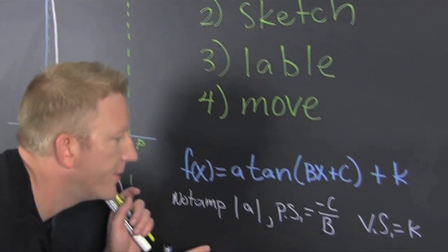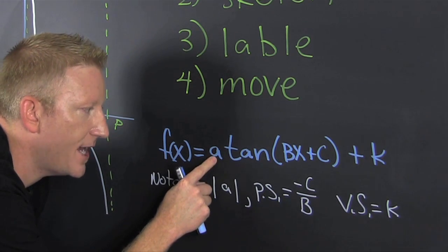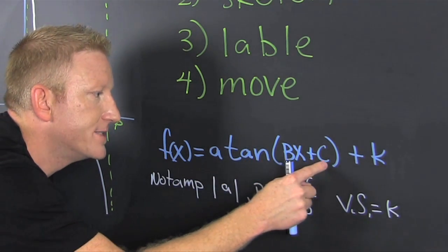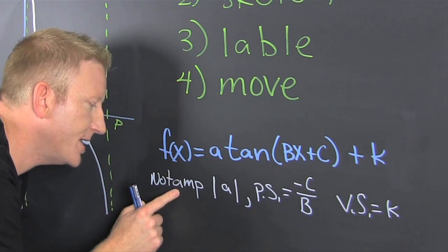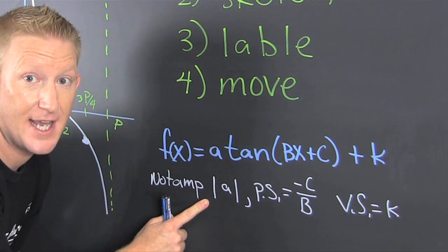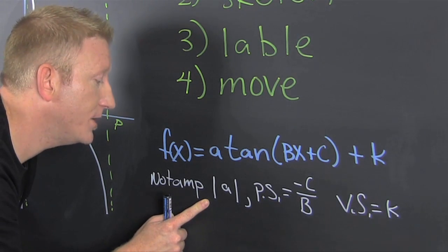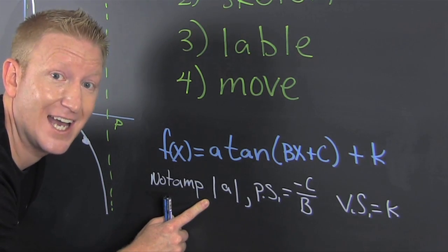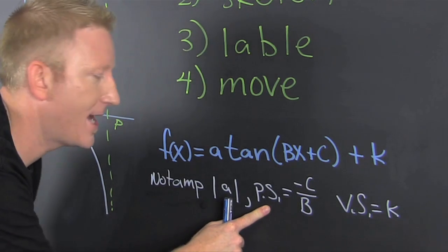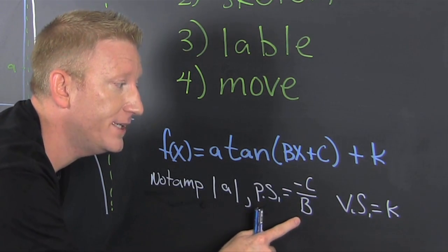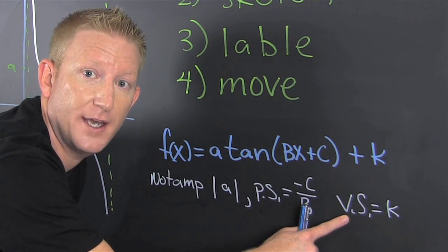Let's talk about the parts. I'm looking at a function of the form f(x) = a·tan(bx + c) + k. Tangent doesn't have an amplitude, so 'a' is where your special points lie. My phase shift happens last — that's minus c over b — and then I have a vertical shift of k.